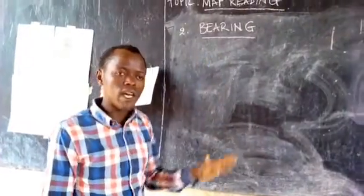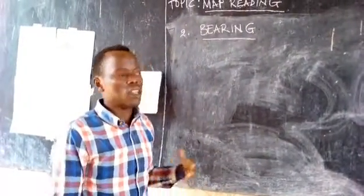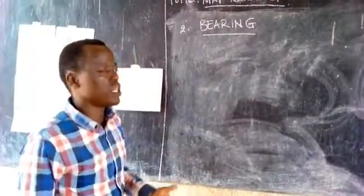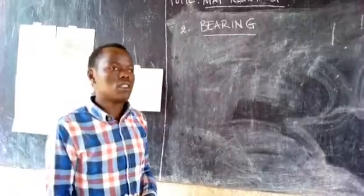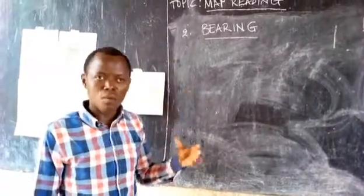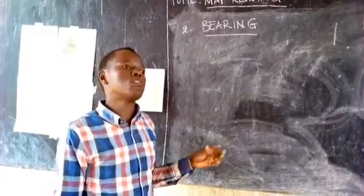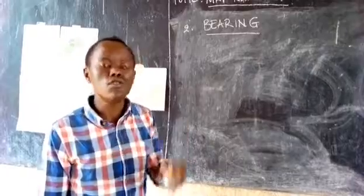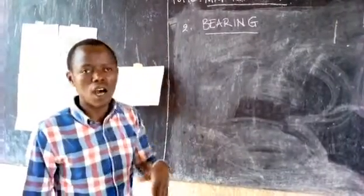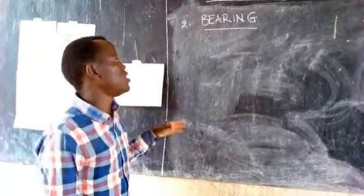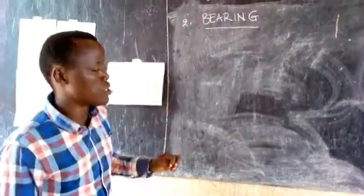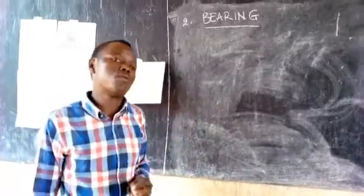When we talk about bearing, this is a direction of a point from another point, which is stated in degrees — it's like a number of degrees of one point from another point.